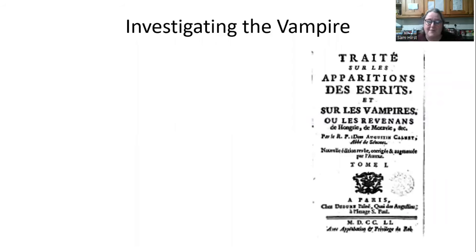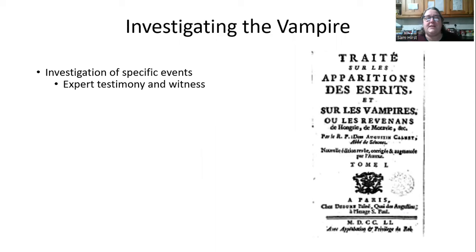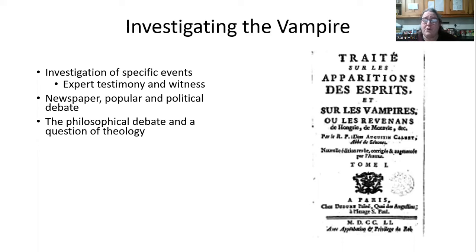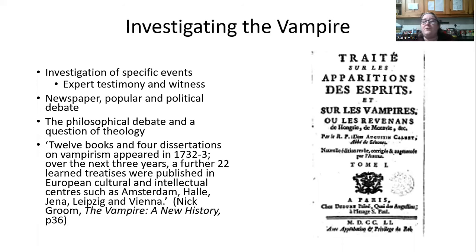Investigating the vampire became popular across European countries, starting with investigations relying on expert testimony and witness, then leading to newspaper, popular and political debates, and even philosophical and theological questions. How could vampires exist? How did this tie in with Christian belief? Could the soul be trapped in the body? As Nick Groom notes, 12 books and four dissertations on vampirism appeared in 1732–3, and over the next three years, a further 22 learned treatises were published in centres such as Amsterdam, Halle, Jena, Leipzig and Vienna.